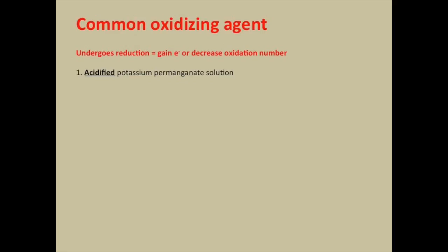For acidified potassium permanganate, the half equation shows MnO₄⁻ becoming Mn²⁺. The color change is obvious — from violet color to a colorless solution. You should memorize this.